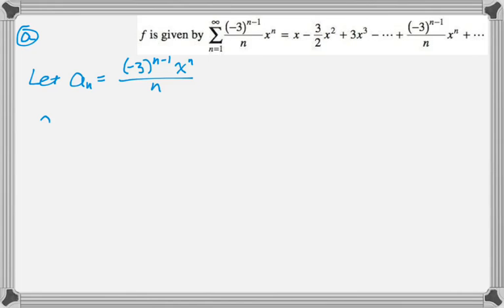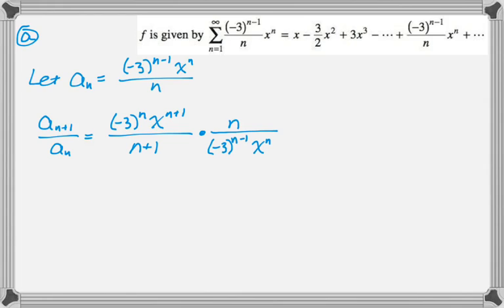So to do the ratio test I need a_(n+1) divided by a_n. So that's going to be equal to, here's a_(n+1): I replace every n in a_n with n+1, and it simplifies to (-3)^n x^(n+1) over n+1. I like to just multiply by the reciprocal of a_n, so it's times n over (-3)^(n-1) times x^n. This actually simplifies down to -3 times n times x all over n+1.